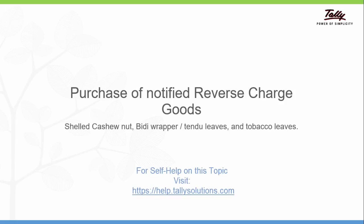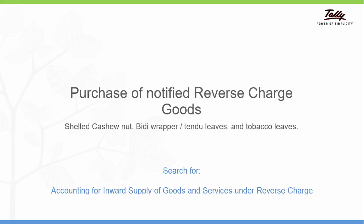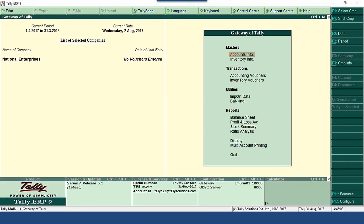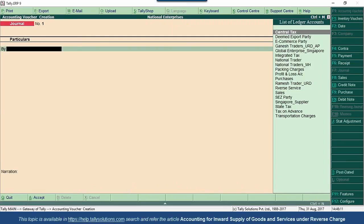Let us first record transactions for CBC-notified goods or services. For these CBC-notified goods or services, it doesn't matter if the goods are purchased from registered or unregistered dealers — the purchase will fall under reverse charge mechanism. The supplier will not charge any tax. As a registered dealer and recipient, we have to raise the liability and make the tax payment to the department. So let us record a purchase of goods using F9 purchases.